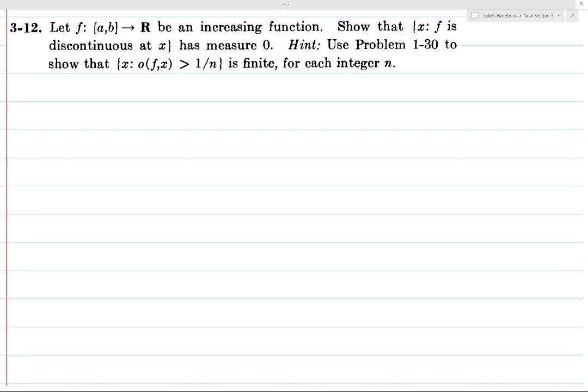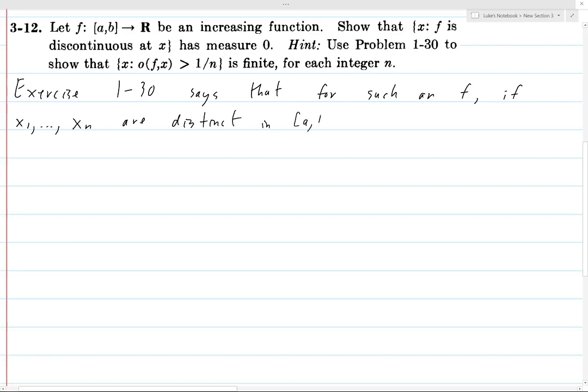And this uses an interesting argument where we look at the set of points. Let me start writing it out. Exercise 1-30 says that for such a function f which is increasing, if we have x1 through xn, a finite collection of distinct points, and of course these are distinct points in this closed interval.